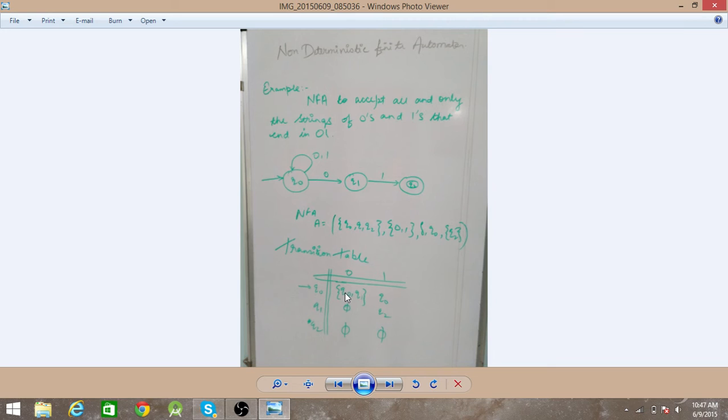Q1 goes nowhere on 0 input. And Q1 goes to Q2 on 1 input. And finally, Q2 goes nowhere because it is the final state.